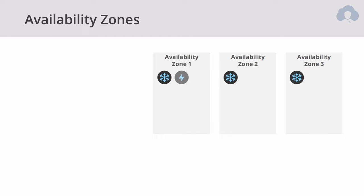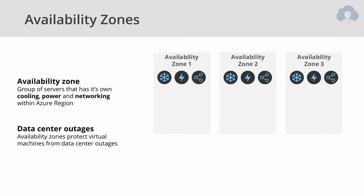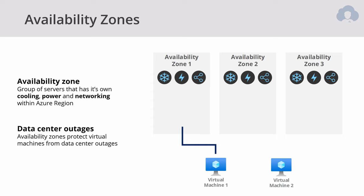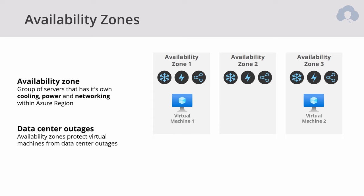Lastly, you have availability zones. An availability zone is a group of servers that share the same cooling, power, and networking, and these are essentially separate data centers. They protect you from data center outages, and you can choose which availability zone each virtual machine lands in. These are all the available options for high availability and high scalability for your virtual machines in Azure.